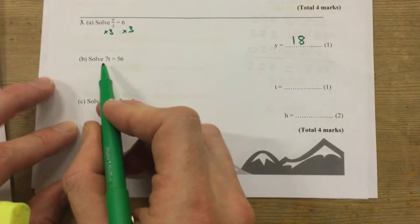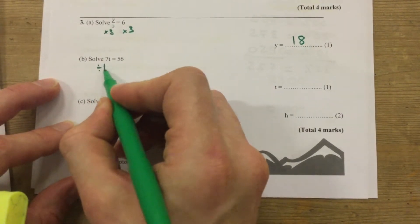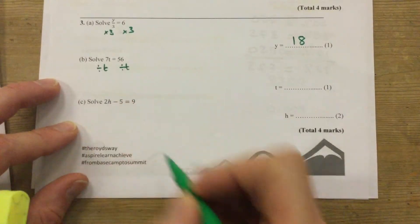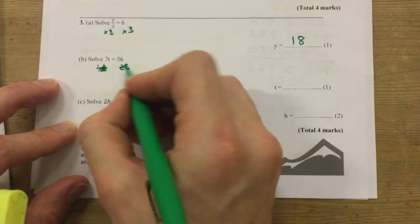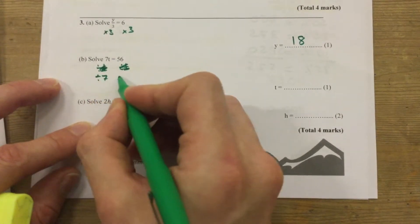7t - that means 7 lots of t, or 7 times by t, so the inverse is divided by t. Can you tell it's Monday morning first period? The opposite is divided by 7. Apologies.